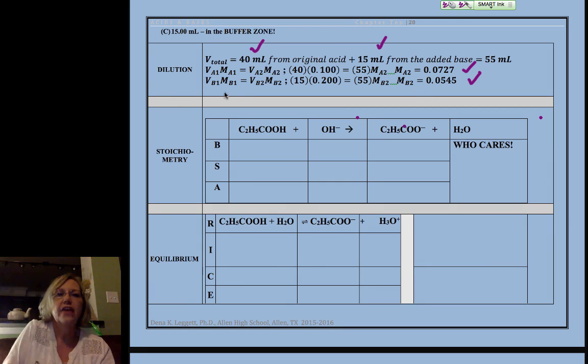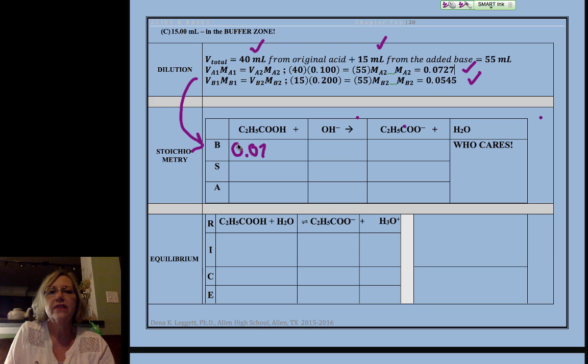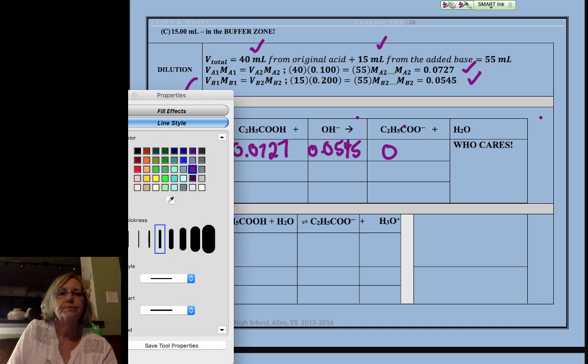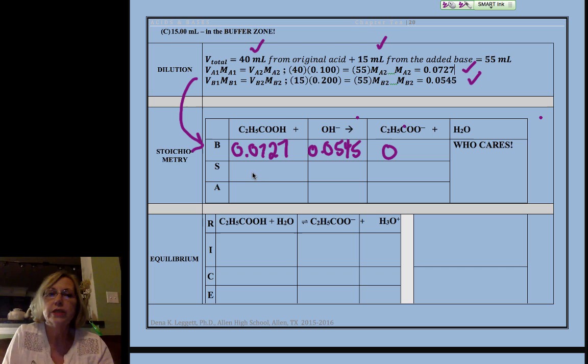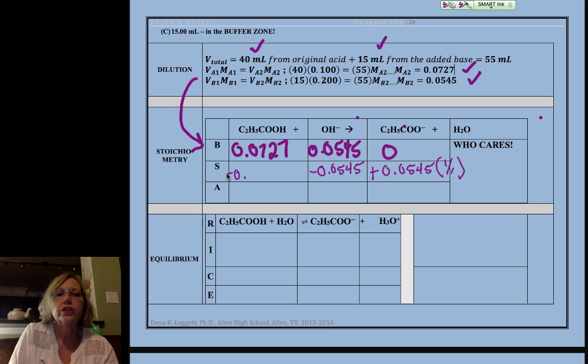Each step feeds into the other, so the dilution feeds into the before step of the stoichiometry. So I have 0.0727, 0.0545, and none of this. Okay, now stoichiometry proceeds until the limiting runs out, and that's my limiting reagent.